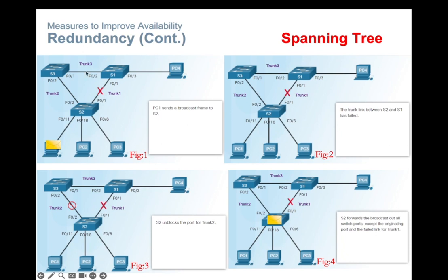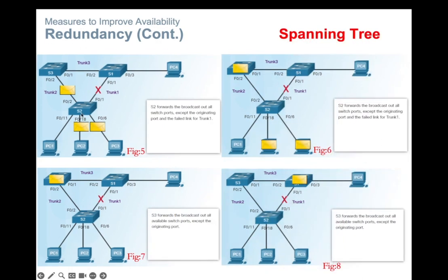Switch two unblocks the previously blocked port for trunk two and allows the broadcast traffic to traverse the alternate path, permitting communication to continue to the destination. In this small network, PC one wants to send a packet to PC four. The original path is from PC one to switch two, switch two to switch one, switch one to PC four. If this link fails, switch two enables trunk two, and the packet from PC one goes to switch two, which broadcasts the message to all outgoing ports except the receiving one, forwarding to PC two, PC three, and switch three. Switch three then forwards that packet to switch one, which delivers the message to PC four.